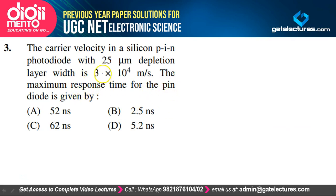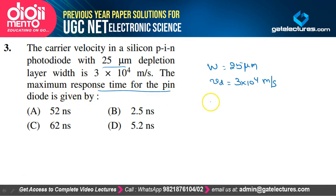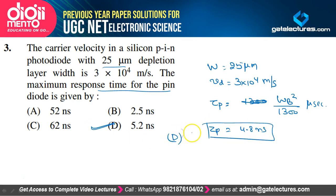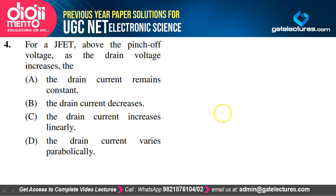For a silicon PIN photo diode with 25 micrometer depletion width and velocity of charge carriers of 3×10⁴ m/s, the maximum response time of the PIN diode is required. The response time equals Wb²/1300 microseconds. Plugging in the values gives approximately 4.8 nanoseconds, so option D is approximately the correct option, though the solution has some ambiguity.